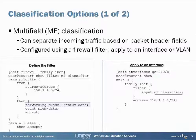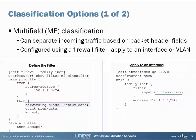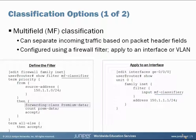There are two general mechanisms available on a Junos device for classification. The first is called multi-field classification. You can separate out incoming traffic based on a variety of parameters in the packet headers — things like IP addressing or port values. The implementation on a Junos device is to configure multi-field classification using a firewall filter, which allows that granular control based on different packet header fields. It's a two-step process: configure a firewall filter to separate and catch the traffic, then apply it to the appropriate interface.